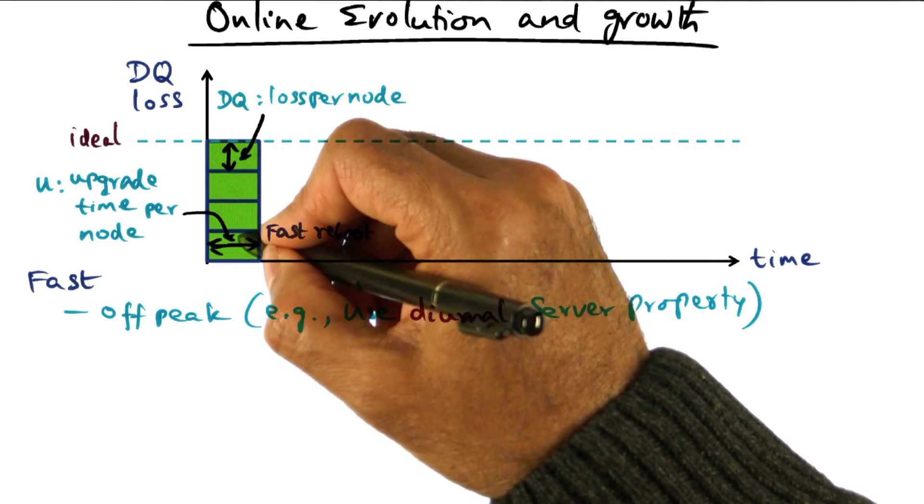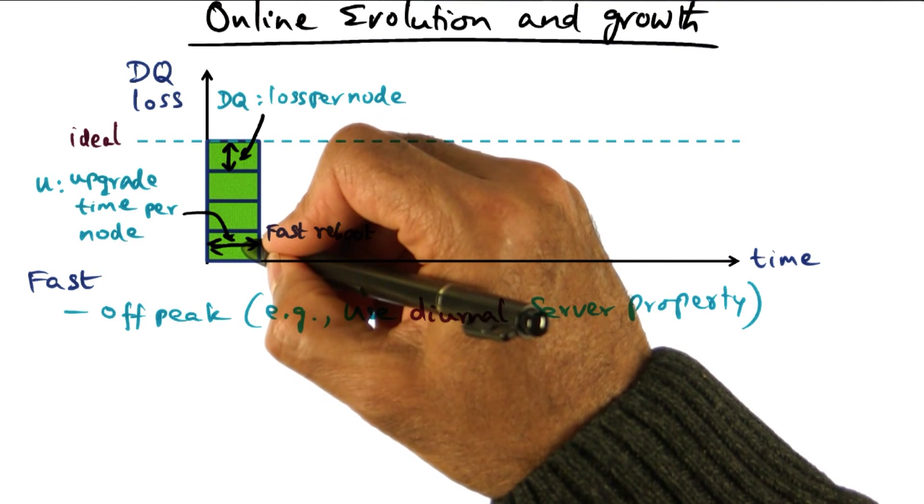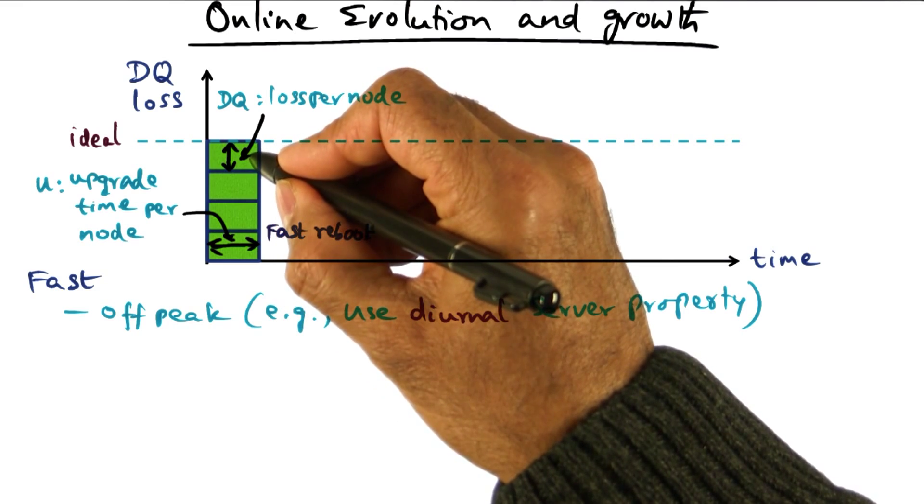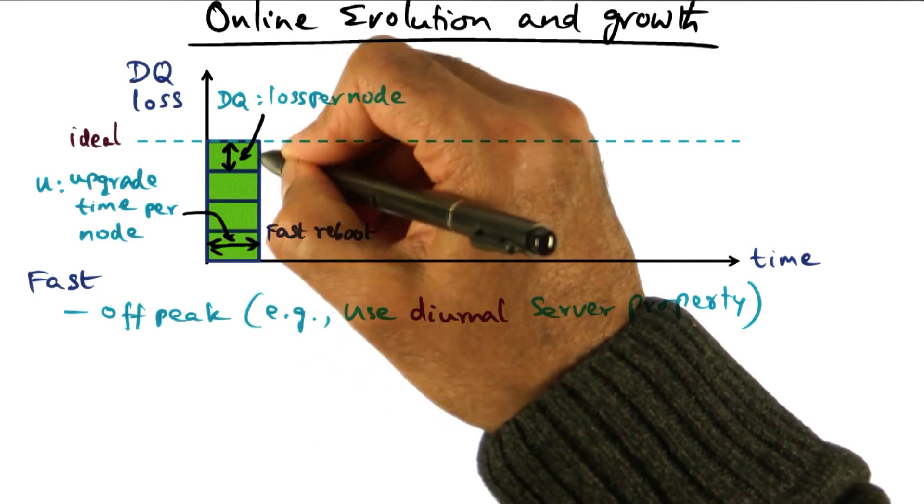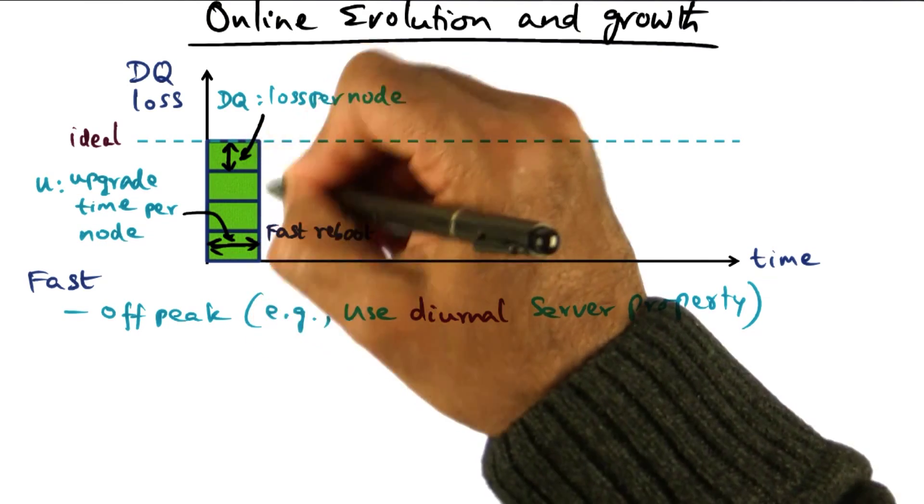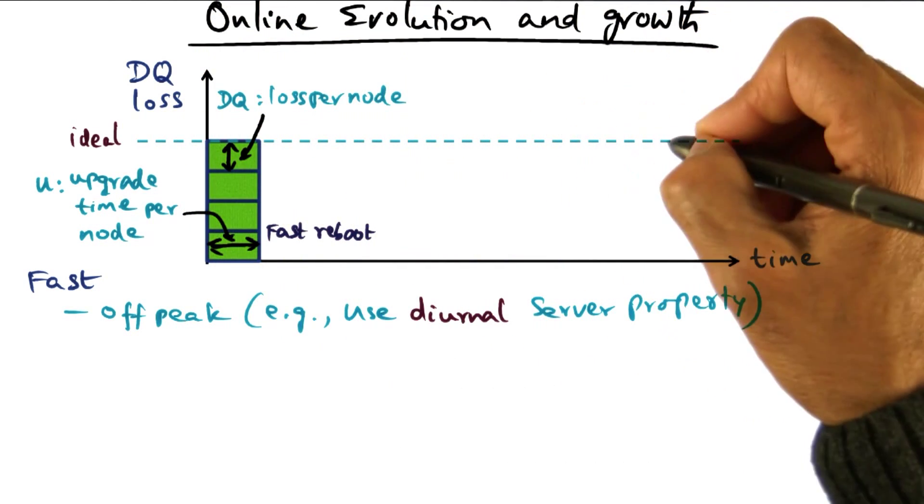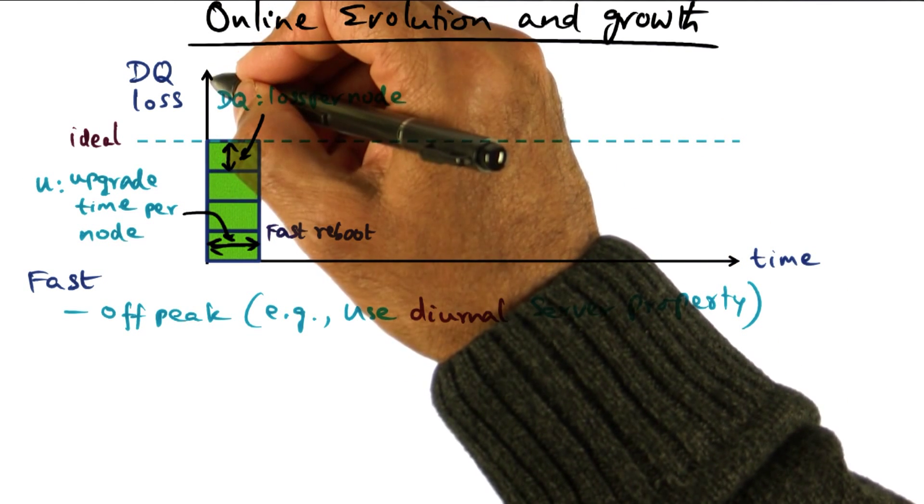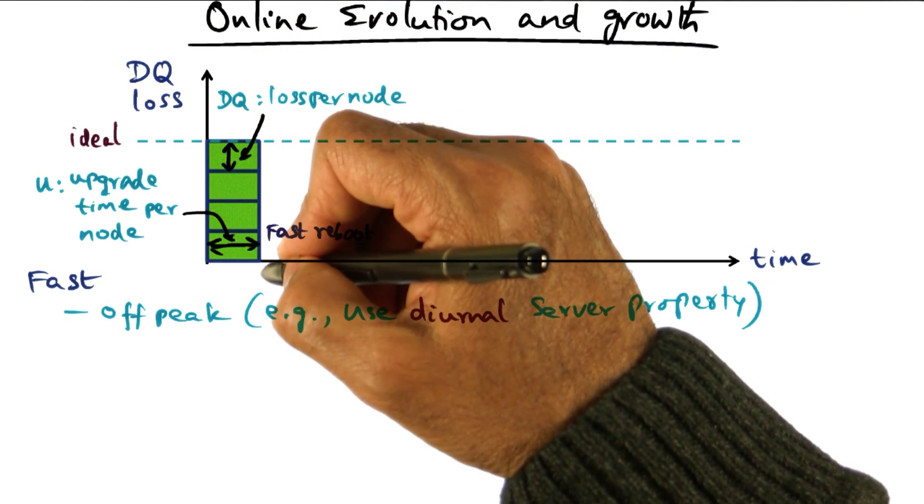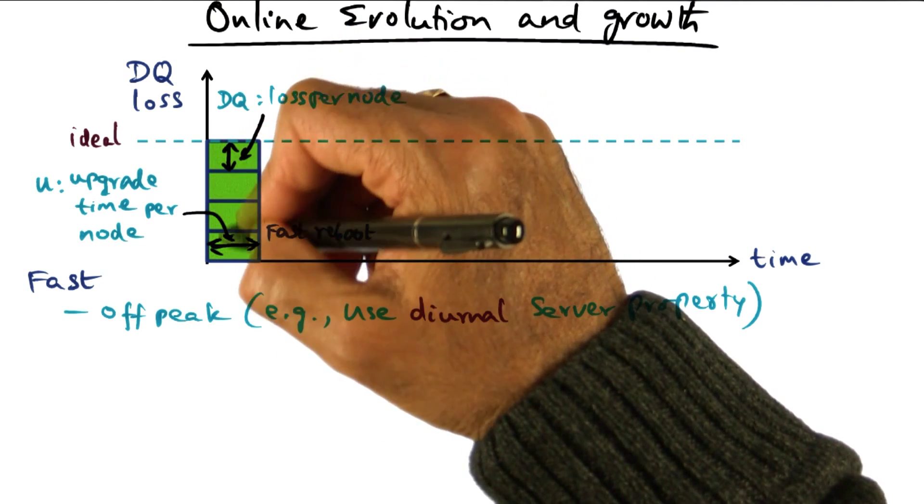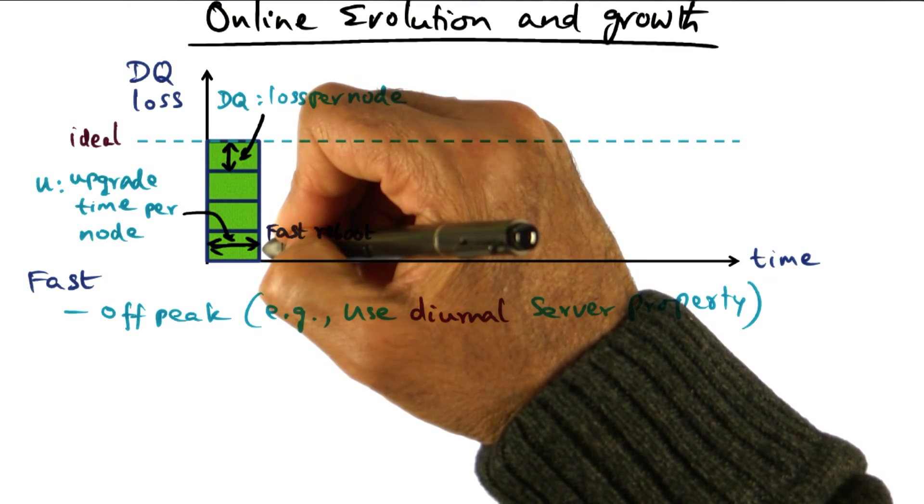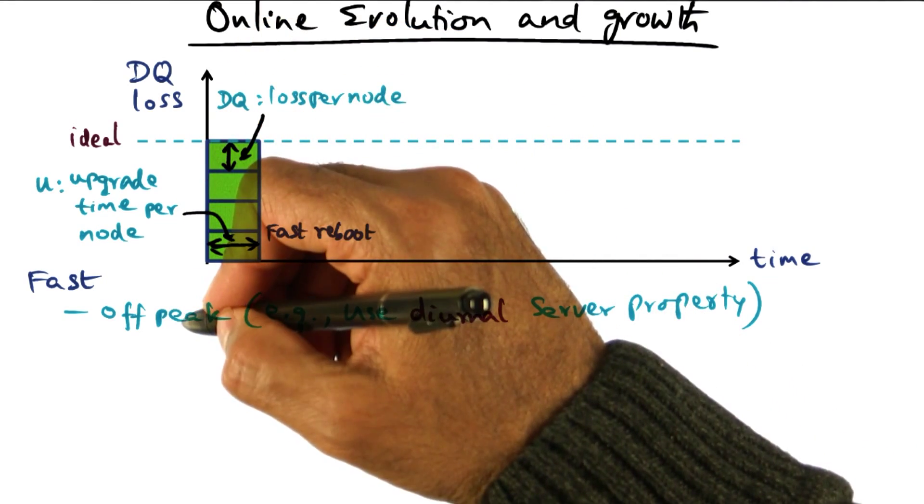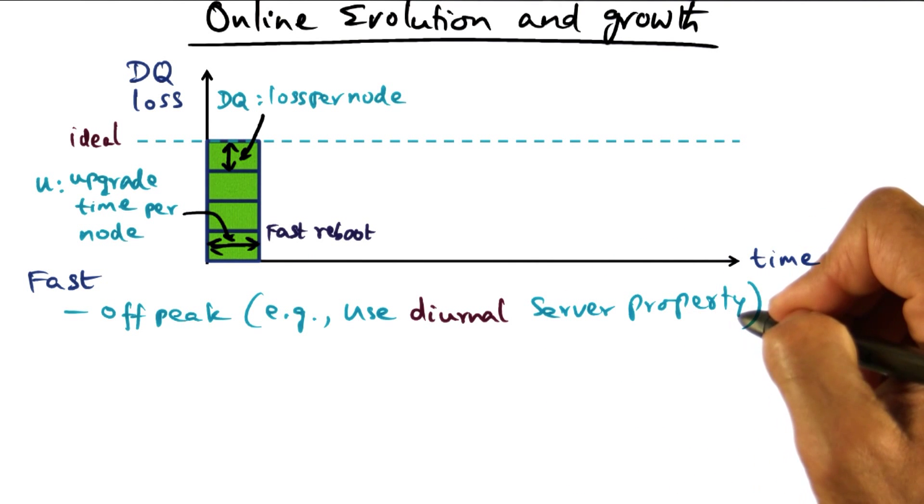So if I bring down a node and upgrade it, it's going to be down for some amount of time. And this is the amount of server capacity that is lost, the DQ that is lost as a result of one server being down. If all the servers are down, which is what is happening with fast reboot, then for this entire time, the area bounded by this green shaded rectangle, we're going to have no service. The ideal is here in terms of the total amount of DQ we want. And if we do this fast reboot, that fast reboot is going to bring all the servers down for a certain amount of time that it takes to upgrade them. And for the entire duration, the service is unavailable.